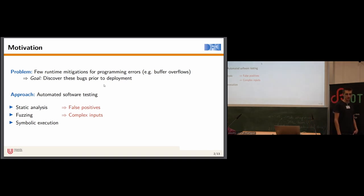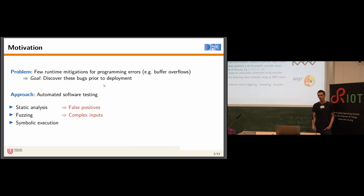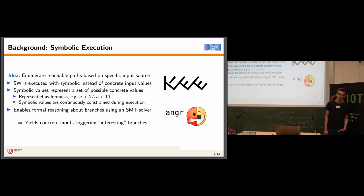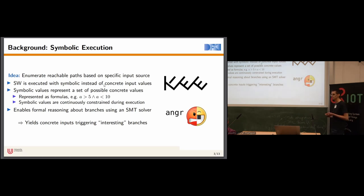A different technique, similar to fuzzing and gaining popularity especially in the academic sector, is symbolic execution. Like fuzzing, symbolic execution is a dynamic testing technique that actually executes the tested software. But contrary to fuzzing, it performs formal reasoning. The idea is similar — we want to enumerate execution paths through a given program based on a specific input source. Contrary to fuzzing, symbolic execution uses symbolic input values rather than concrete ones, and these symbolic values always refer to a set of possible concrete values, often represented as mathematical formulas.